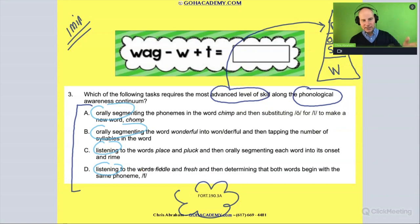Now, what about this one? Listening to the word fiddle and fresh and determining that both words begin with the phoneme F. What's that? That is an example of where you're telling that words are similar by their initial sound, their initial phoneme. That is alliteration. So I want you to say D, write this down. D is basic phonological awareness, alliteration, word level activity.